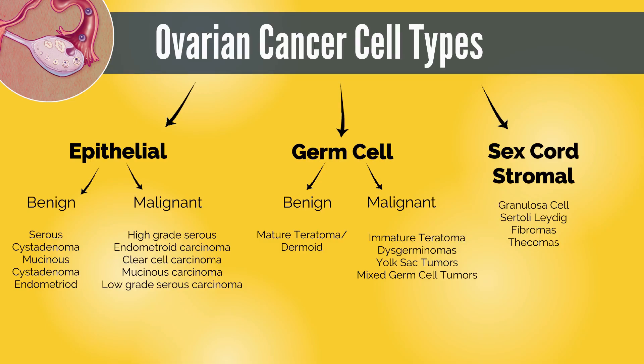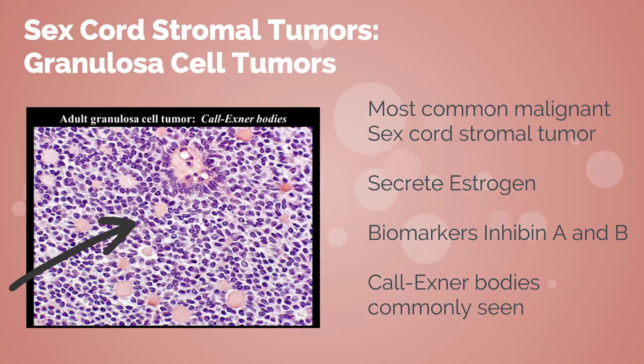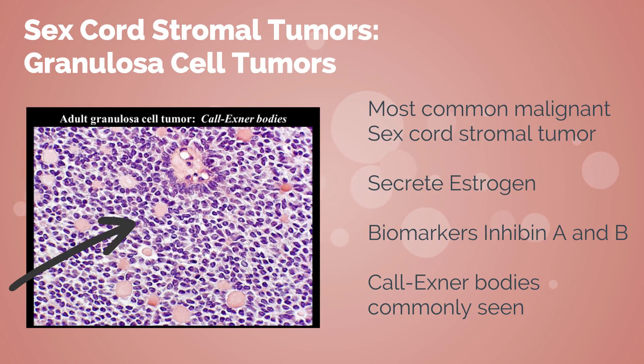Sex cord stromal tumors are from cells that would normally give rise to structures surrounding the oocyte. Malignant sex cord stromal tumors are rare and account for only 1.2% of all primary ovarian cancers. There are four different types: granulosa cell tumors, Sertoli-Leydig cell tumors, thecomas, and fibromas. Granulosa cell tumors are the most likely to have malignant potential of all the sex cord stromal tumors.